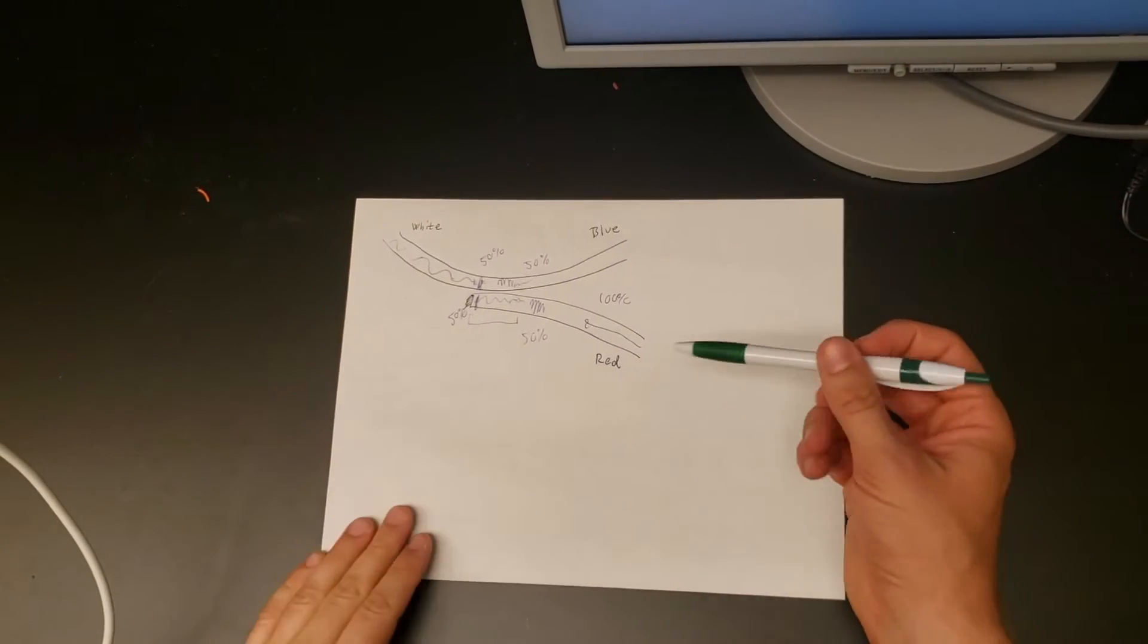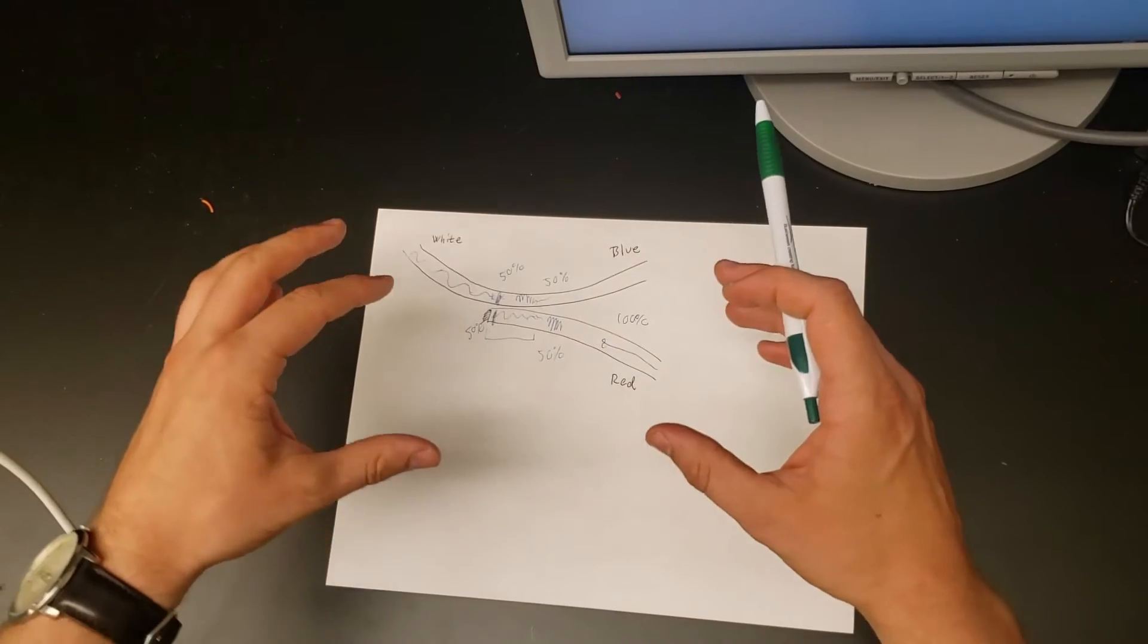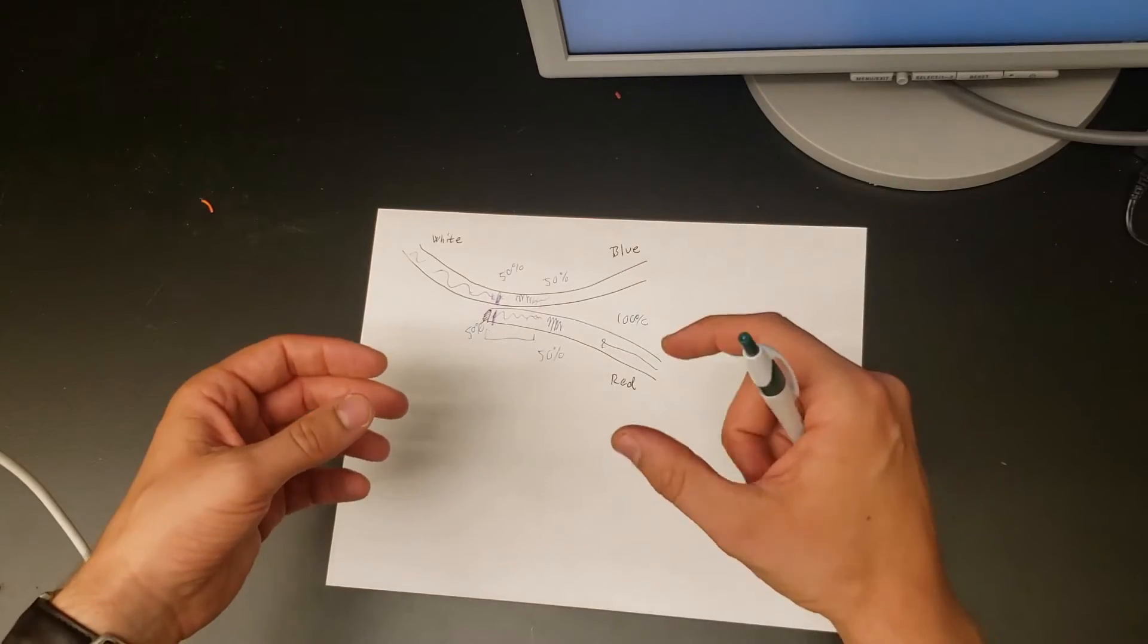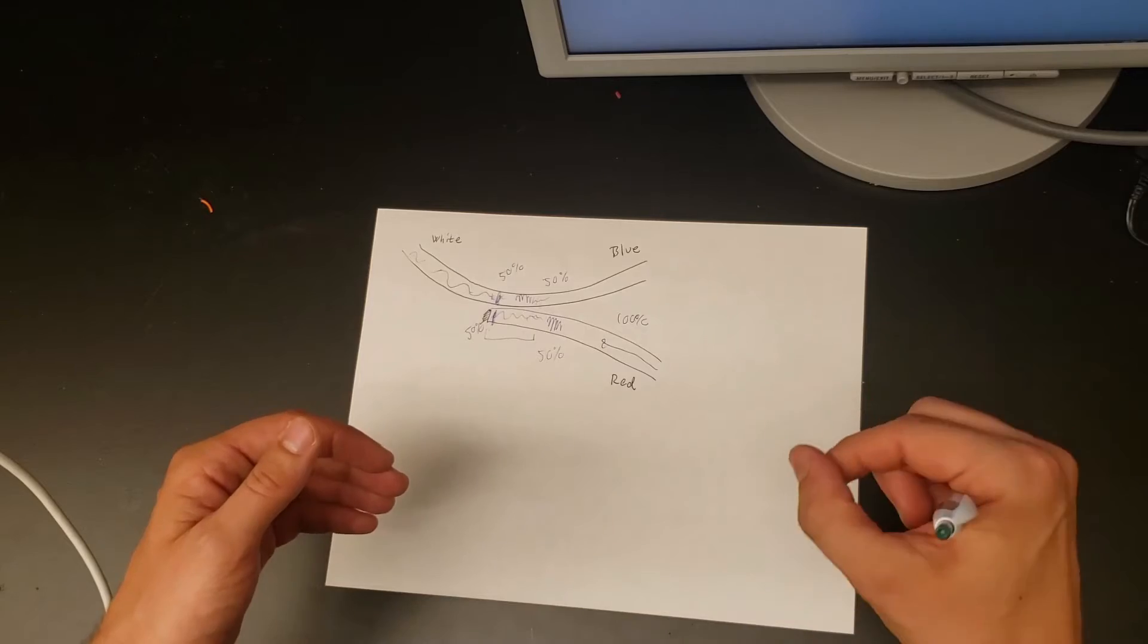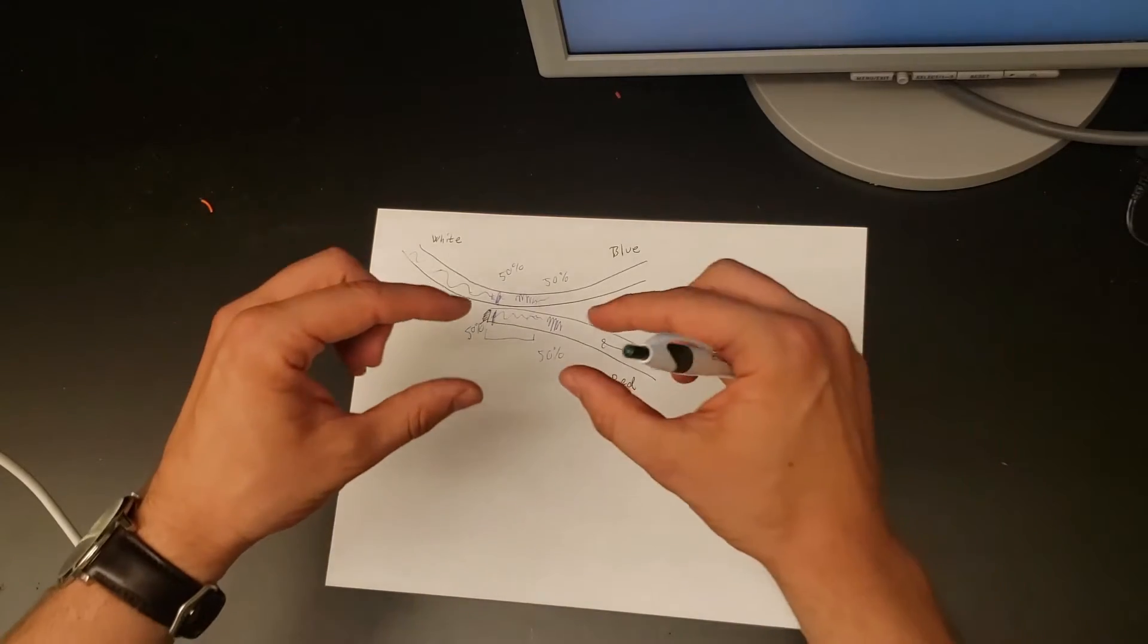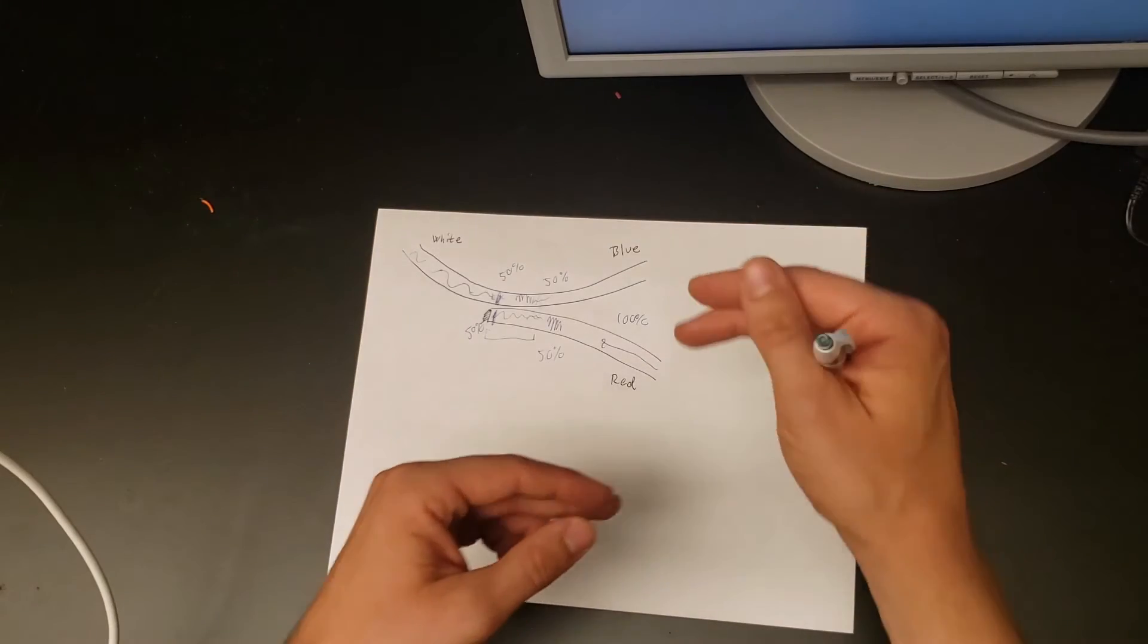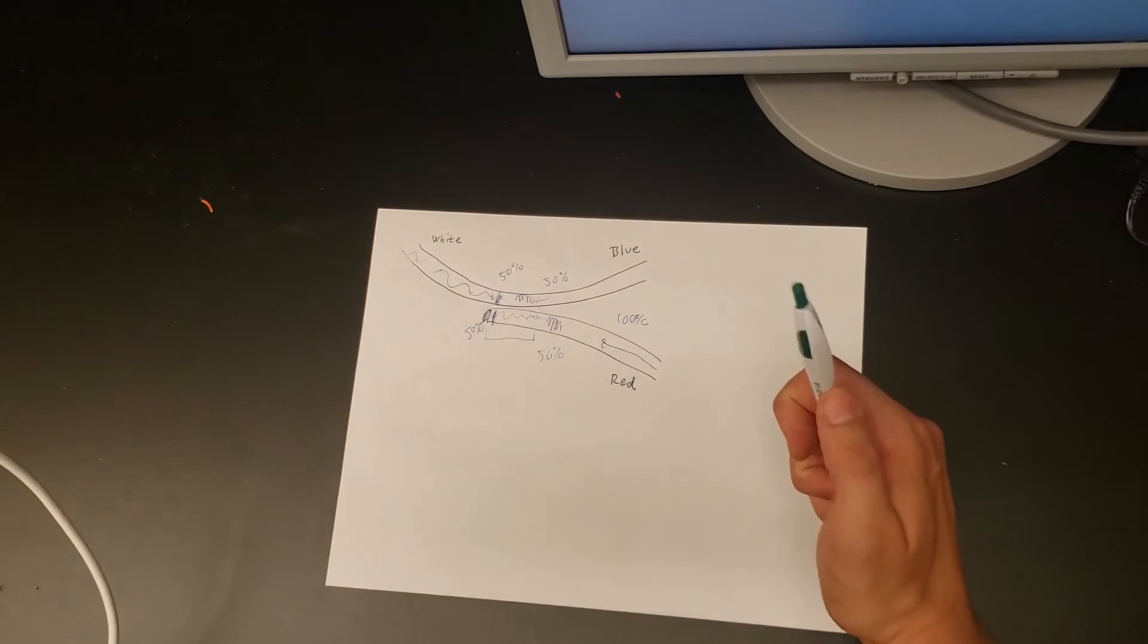Before we move on, I should stress that this 50-50 coupler isn't the only type we can create. You can have 20-80 couplers where 80% goes into one branch and 20% in the other, or 1-99 couplers where only a tiny bit is tapped off for monitoring. You can also design tunable couplers where you mechanically separate or bring the fibers closer together to change the coupling ratio.